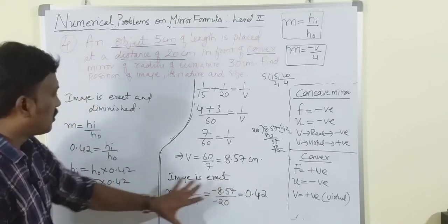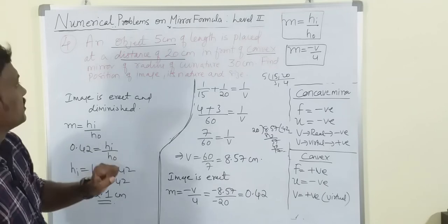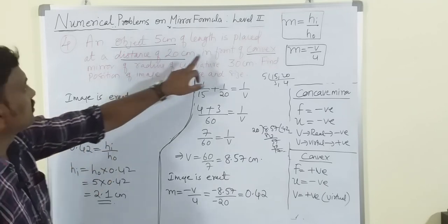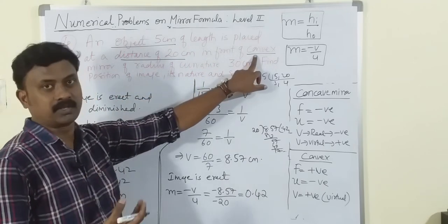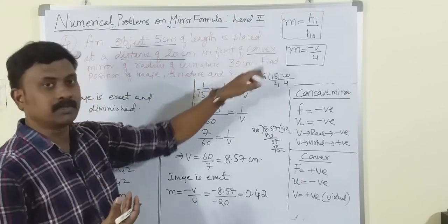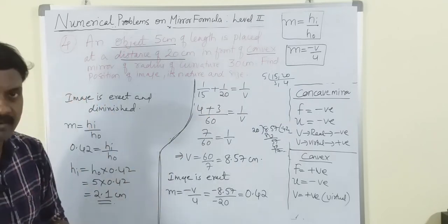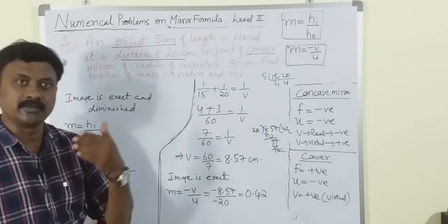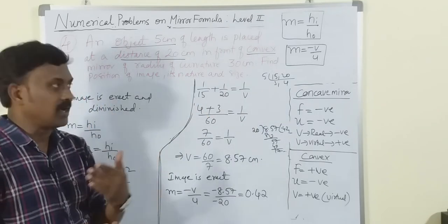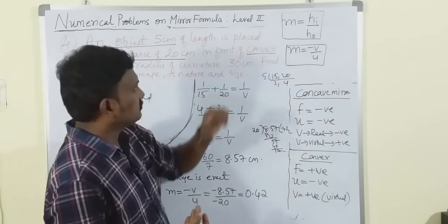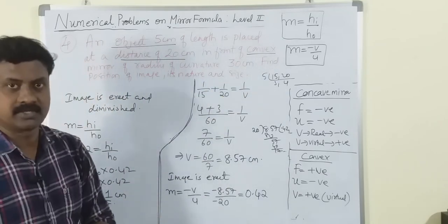Magnification is 0.42, positive and less than 1, giving a diminished image. All characteristics match those of a convex mirror: virtual, erect, and diminished.